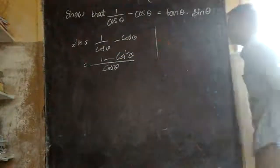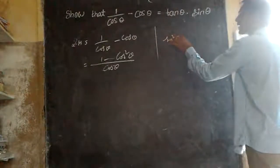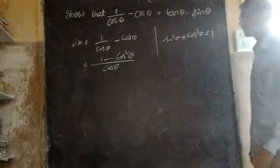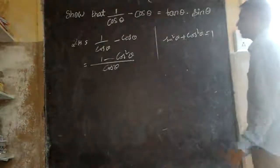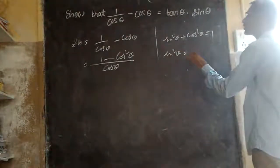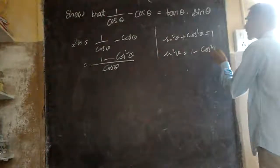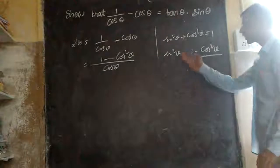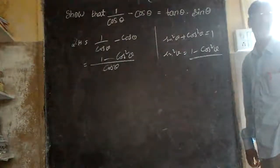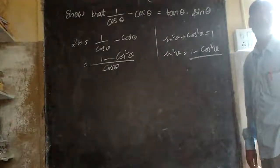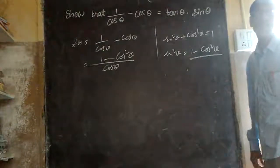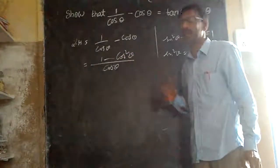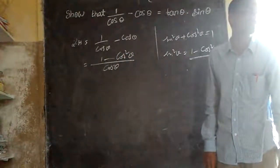I gave an identity: sin square theta plus cos square theta equals to 1. So sin square theta is equal to 1 minus cos square theta. Here I take it as a subject. Then 1 minus cos square theta is nothing but sin square theta. So in place of this, I will take sin square theta.